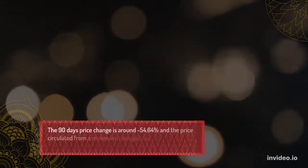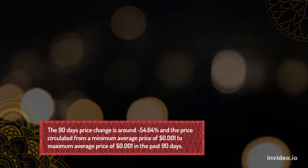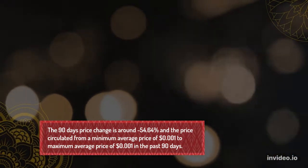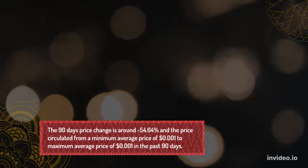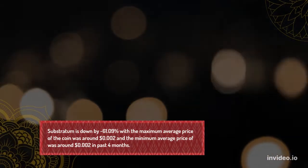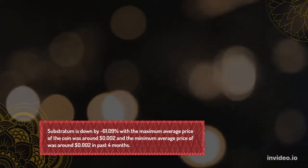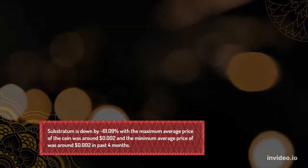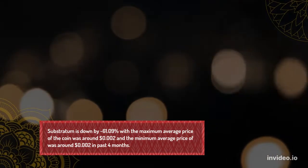The 90-day price change is around minus 54.64%, and the price circulated from a minimum average price of $0.001 to a maximum average price of $0.001 in the past 90 days. Sub-Stratum is down by minus 61.09%, with the maximum average price of the coin at around $0.002 and the minimum average price at around $0.002 in the past 4 months.